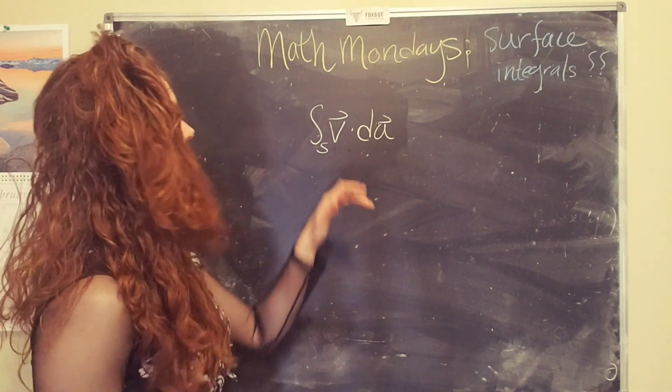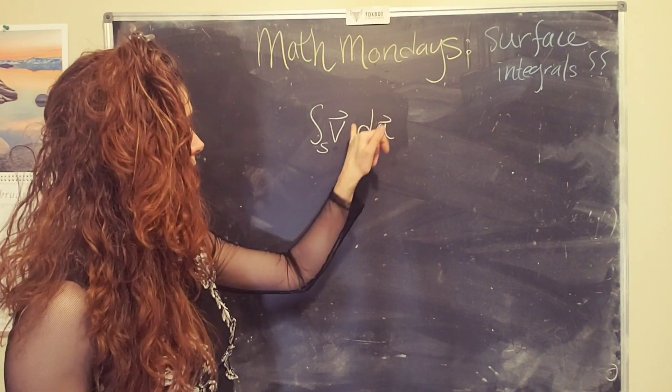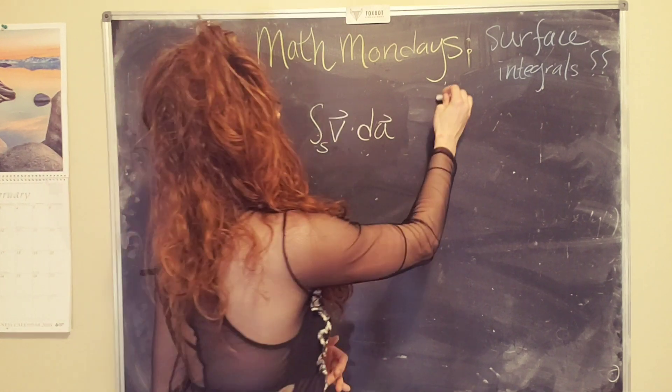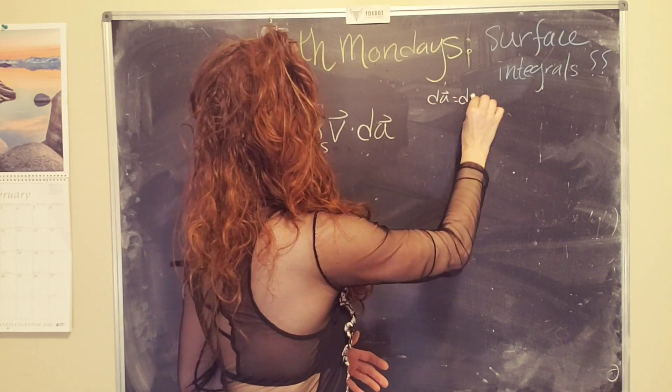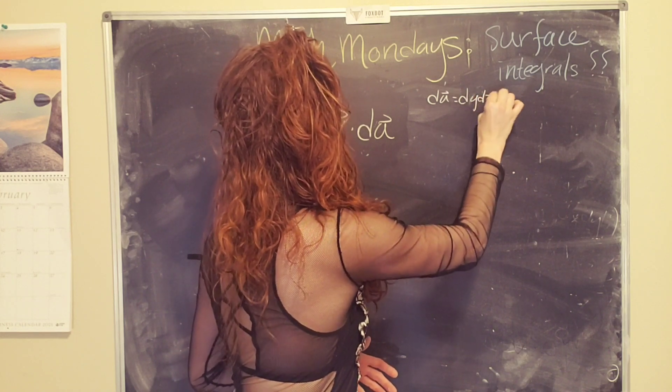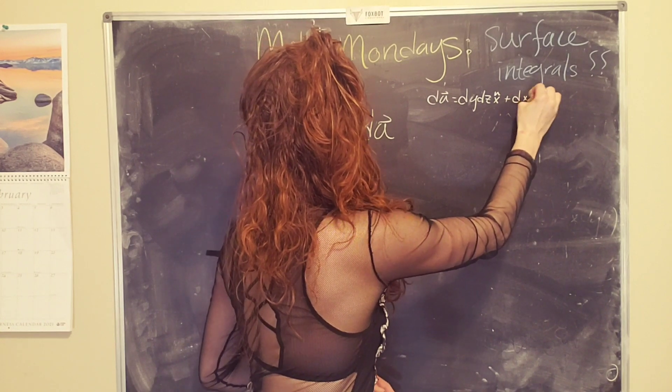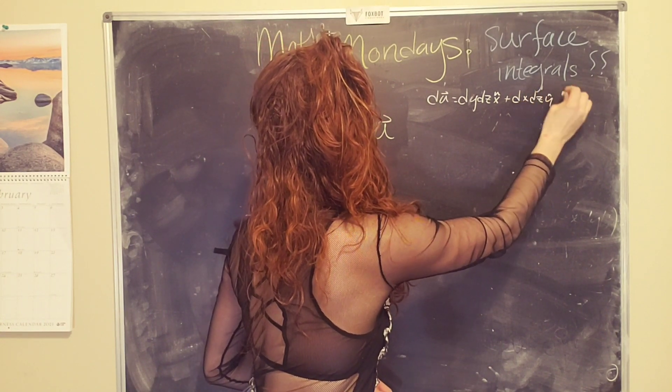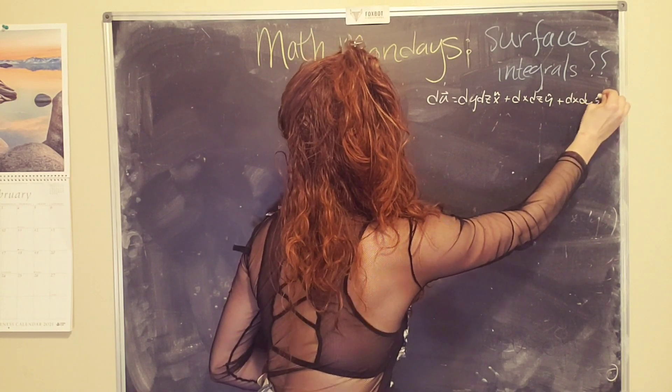So yeah, okay. So you have a vector function v and then you have dA which is defined to be dy dz x hat in the x direction plus dx dz y hat in the y direction plus dx dy z hat in the z direction.